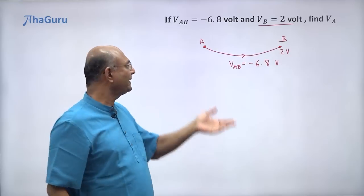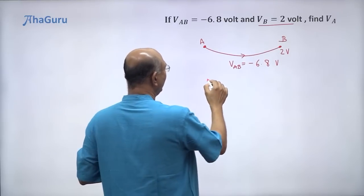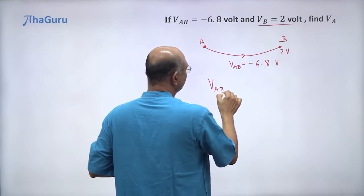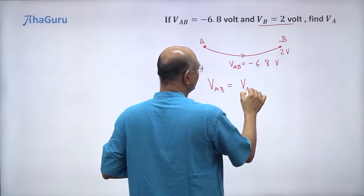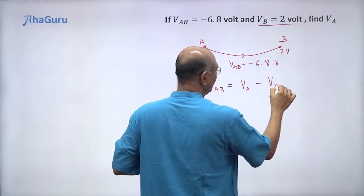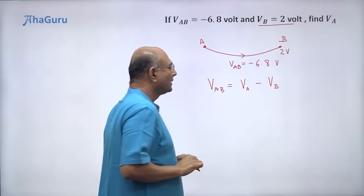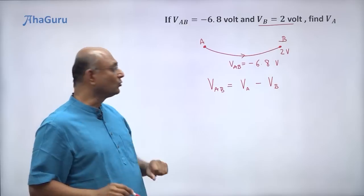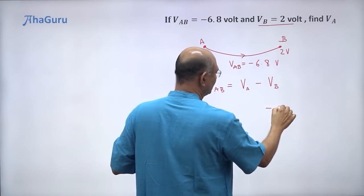From this we can directly find out what is VA. How? VAB is VA minus VB. VA minus VB. Now VB we know it is 2 volts. So I can just put that here, minus 2 volts.